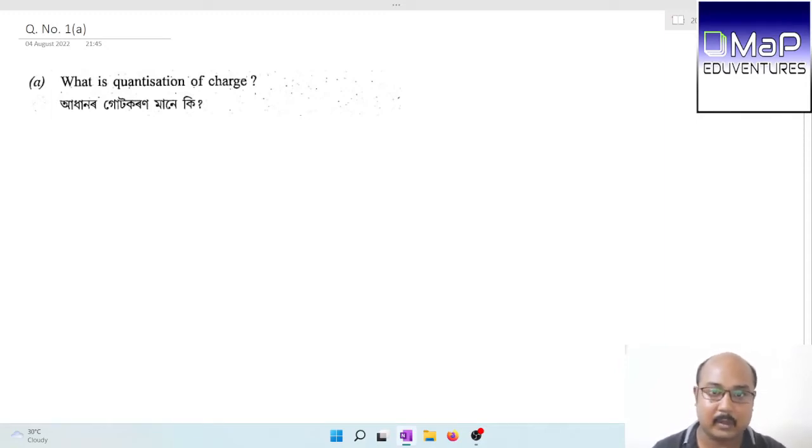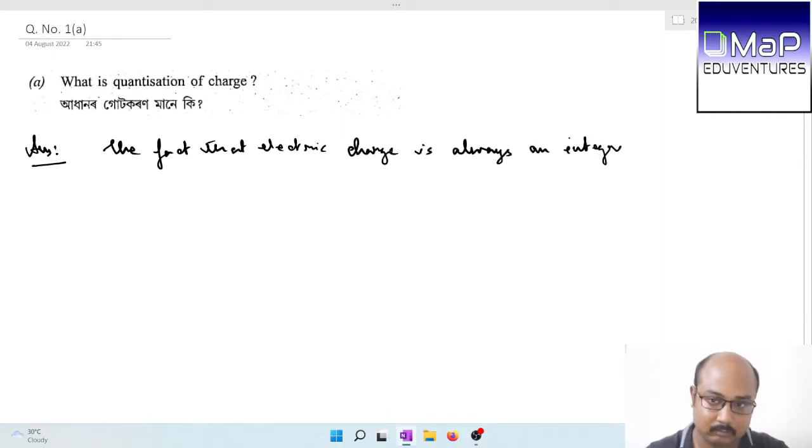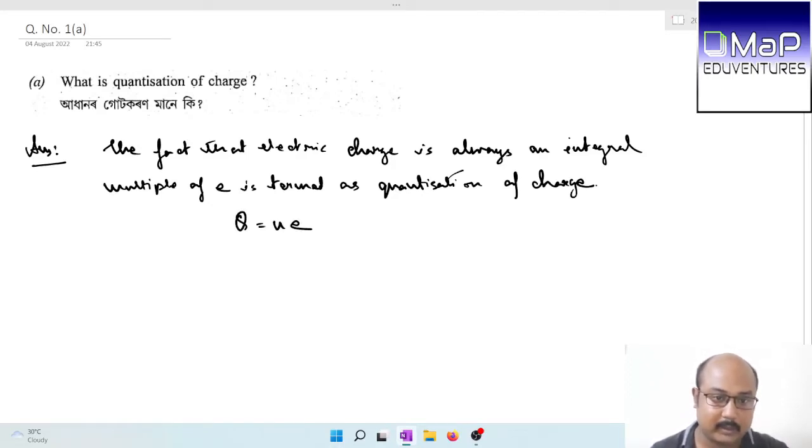In mathematical form, Q is equal to ne, where n is an integer and e is the electronic charge. The fact that electric charge is always an integral multiple of e is termed as quantization of charge. Mathematically, Q equals Ne, where e is the electronic charge and N is an integer.